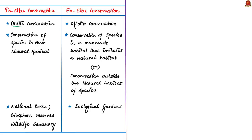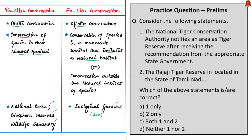Regarding in-situ and ex-situ conservation: in-situ means on-site and refers to the conservation of species in its natural habitat. Ex-situ conservation means off-site conservation — conservation of species in a man-made habitat that imitates a natural habitat. Examples of in-situ conservation in the Indian context include national parks, biosphere reserves and wildlife sanctuaries. Whereas examples of ex-situ conservation would be zoological gardens, i.e., zoos.